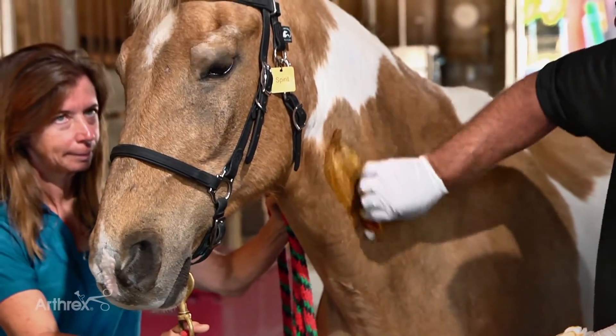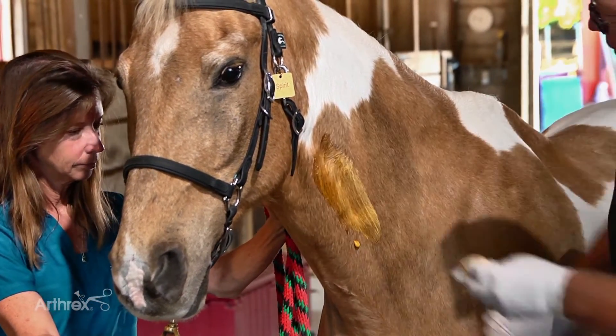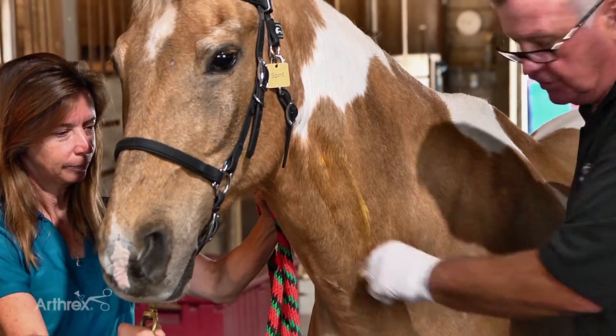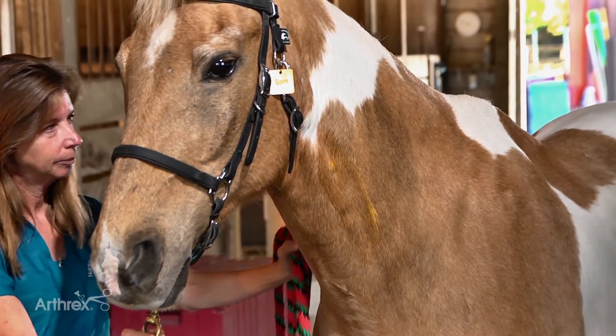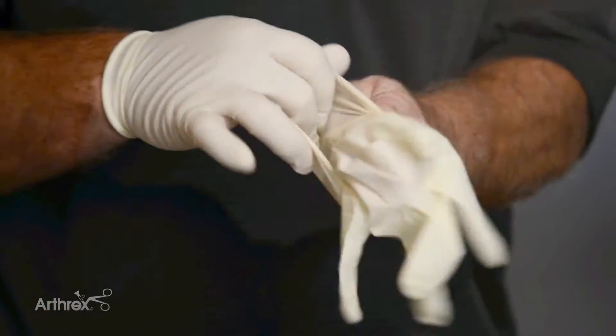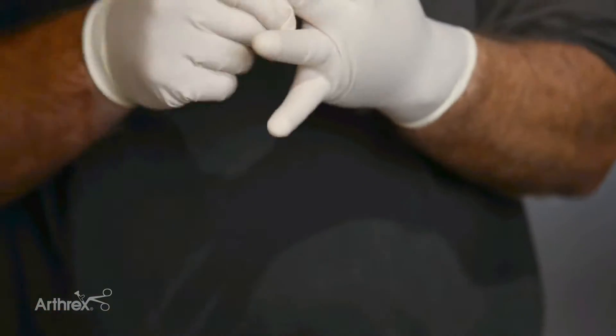Preparing the jugular vein is done in a similar manner for the Angel as was done for the other products that we've discussed. We like to get the jugular as clean as possible. What I like to do after scrubbing the jugular vein is to utilize sterile gloves.